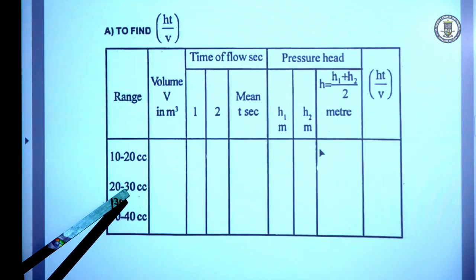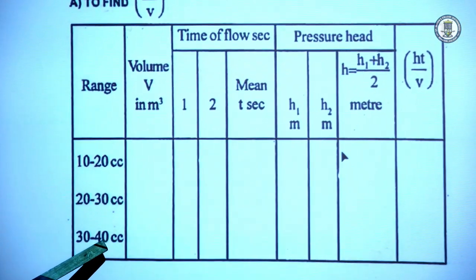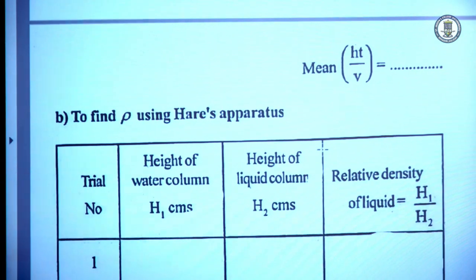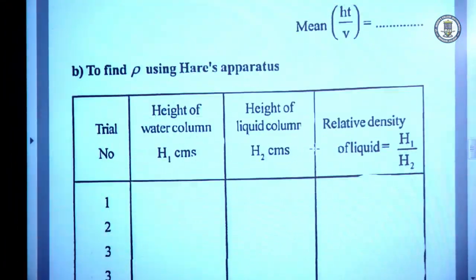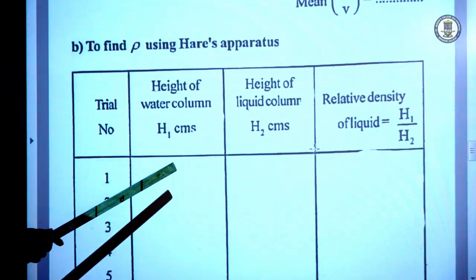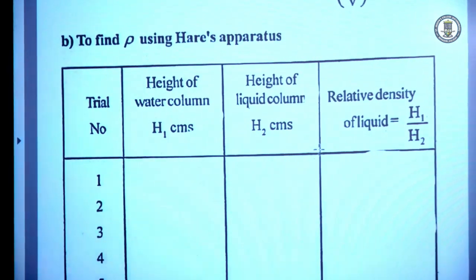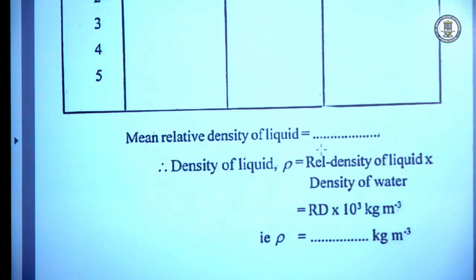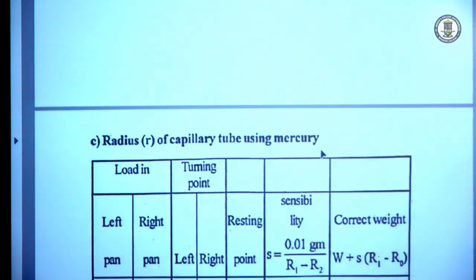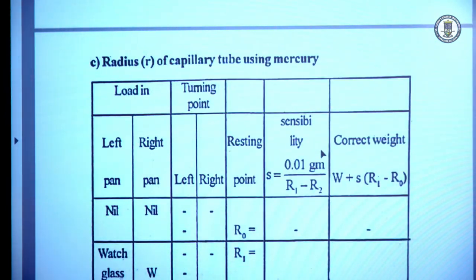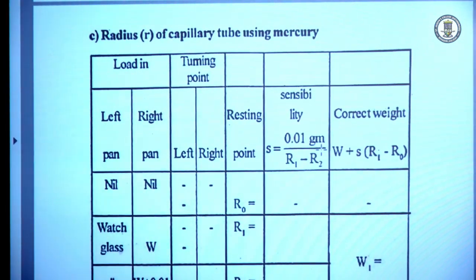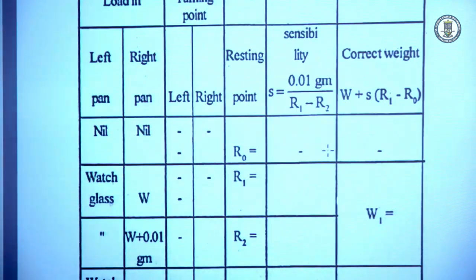The experiment is repeated for ranges 20 to 30, 30 to 40, 40 to 50, etc., and we obtain the mean value of H·T/V. Using the Hare's apparatus we determine the relative density and then the density of the liquid. For the radius of the capillary tube, we use the mercury pellet method.